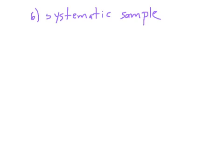A systematic sample is probably less likely to be biased. The idea here is that you basically pick every kth person. For example, if I wanted to do a systematic sample of Sacred Heart students, go through the roster and pick every 15th person, every 5th person, every 50th person.